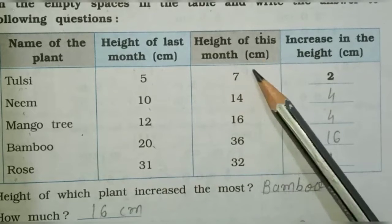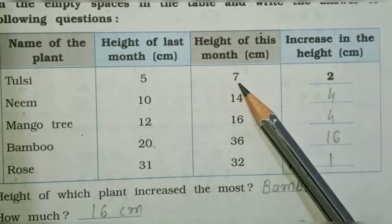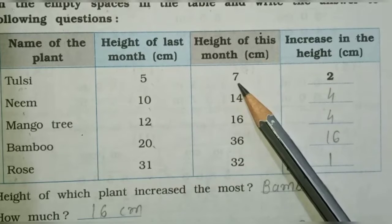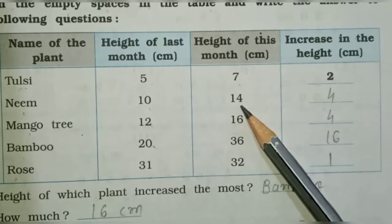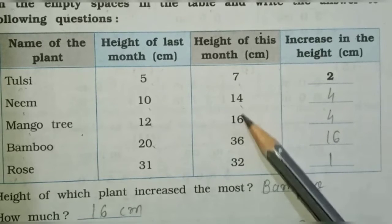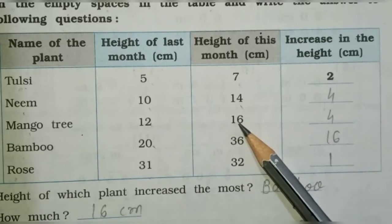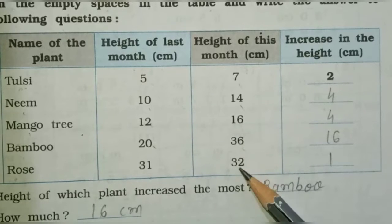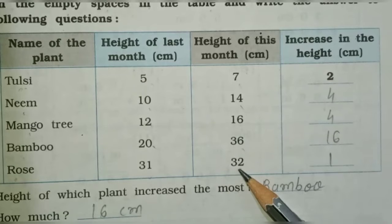Next column: height of this month in centimeters. Tulsi 7 centimeters, neem 14 centimeters, mango tree 16 centimeters, bamboo 36 centimeters, and last one rose 32 centimeters.